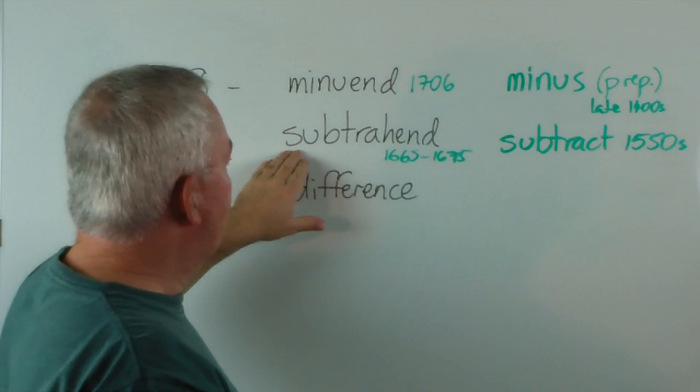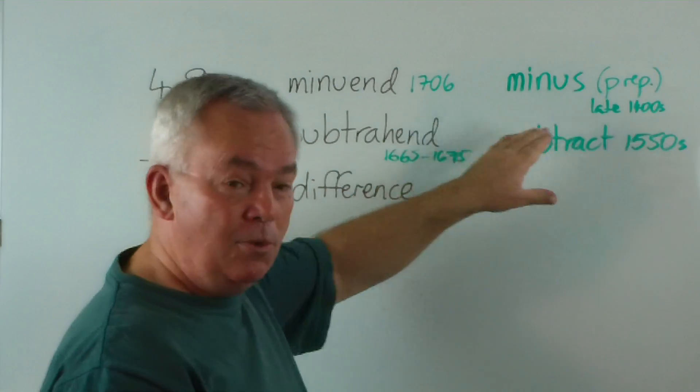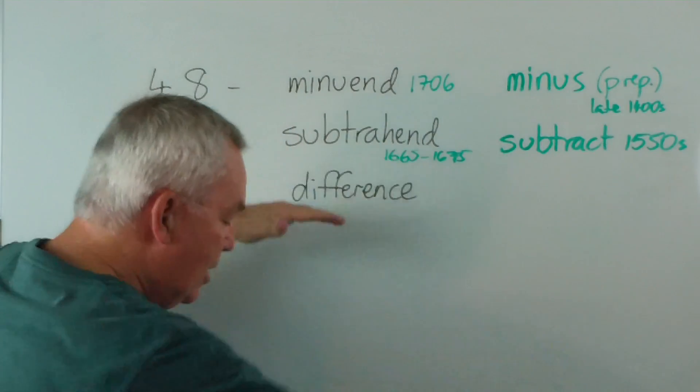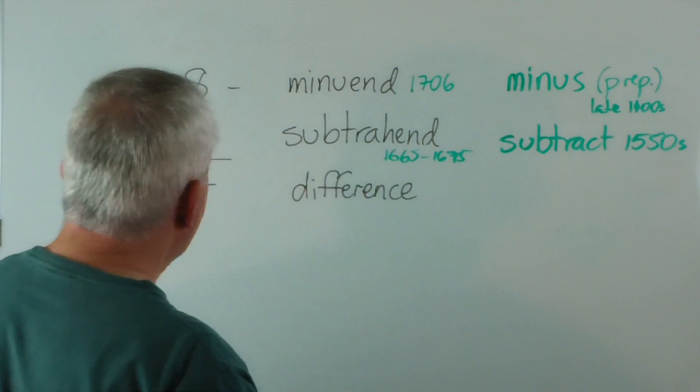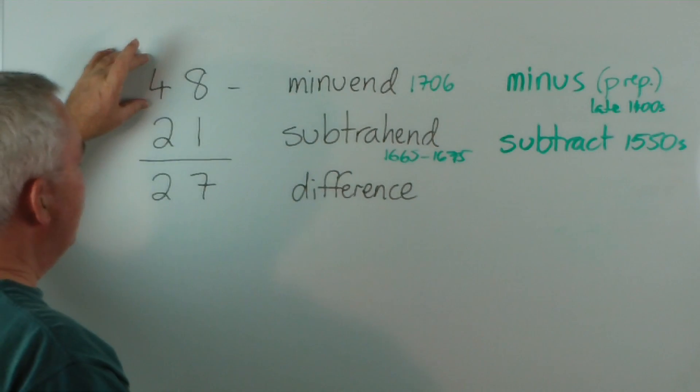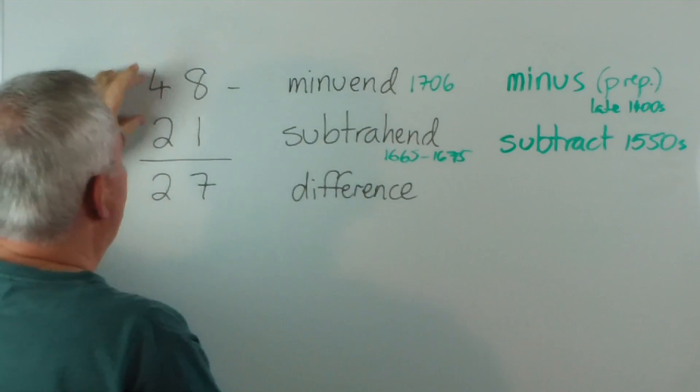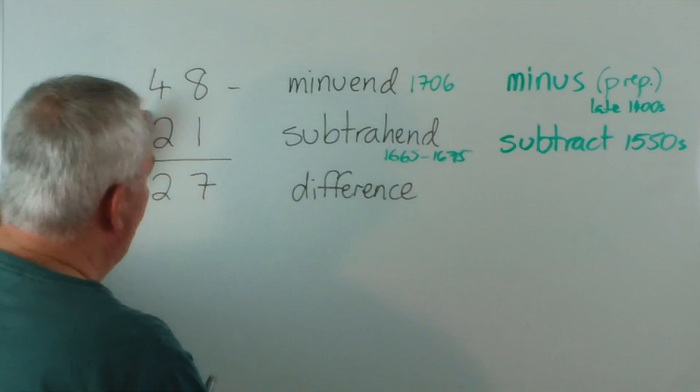It used to be called the minuendus numerus, the number to be reduced. And this was the subtrahendus numerus, the number to be taken away from underneath, the number to be removed. So that's the number to be reduced, minuend, and the number to be taken away.